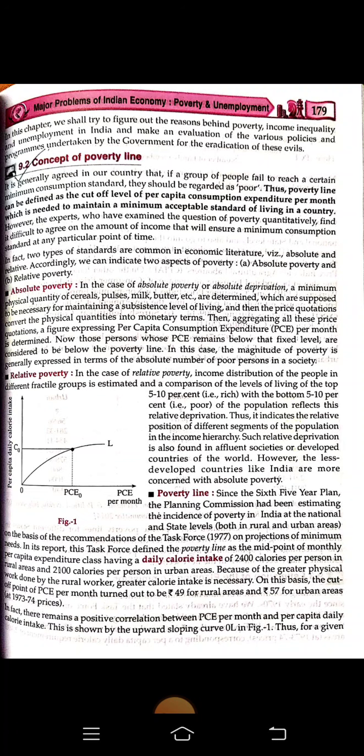The urban areas required 2,100 calories per person per day. Because of the greater physical work done by rural workers, greater calorie intake is necessary. On this basis, the cut-off point of PCE per month turned out to be ₹49 for rural areas and ₹57 for urban areas.